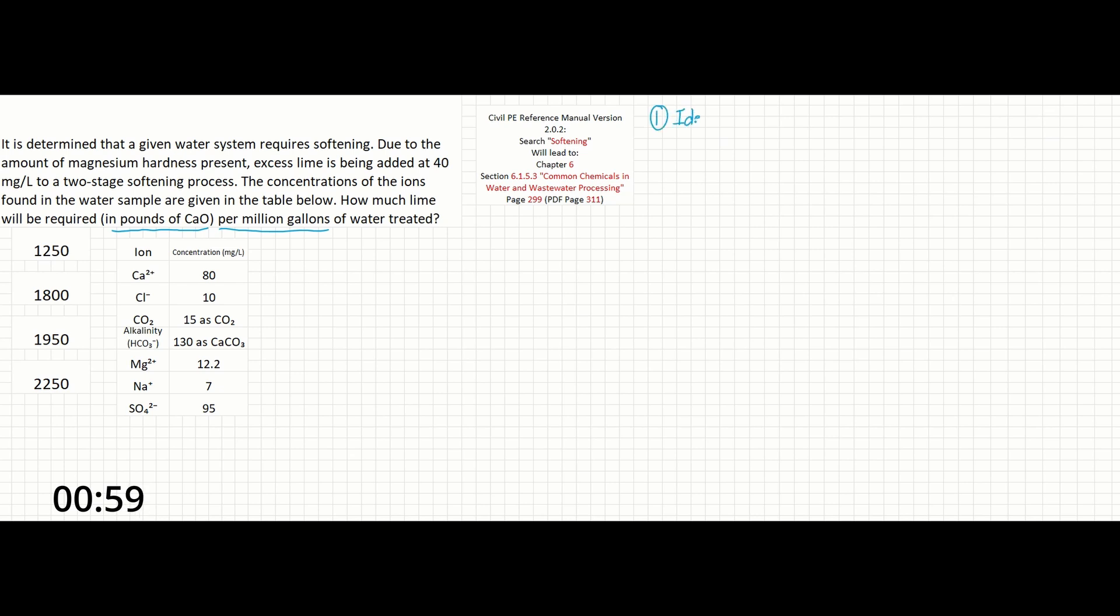First, we need to identify the ions on our list that are related to softening. These are going to be calcium, Ca2+, carbon dioxide, CO2, alkalinity, and magnesium, Mg2+.